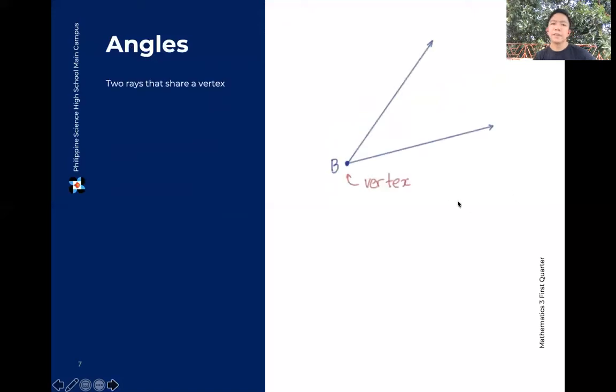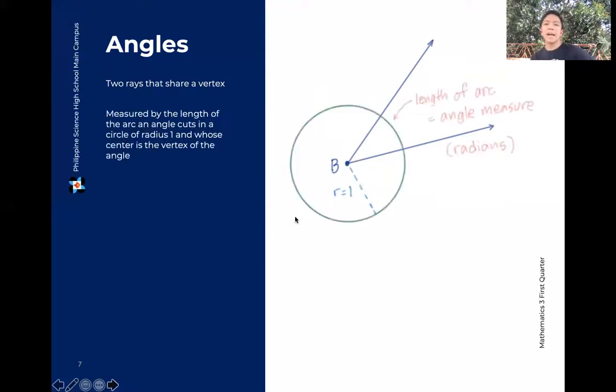Next, angles. These are basically two rays that share the same vertex. So may ray tayo dito na ang vertex ay B. Meron tayong second ray na ang vertex ay B. Icocombine natin sila, ijoin natin sila din sa vertex. Then we have geometrically an angle. Ang measurement sa angle natin, I'm not sure if you've encountered this before, pero ginagamit natin yung tinatawag na radians, unit na radians. Pwede rin degrees. You use degrees more sa physics, but in math, ginagamit natin yung radians.